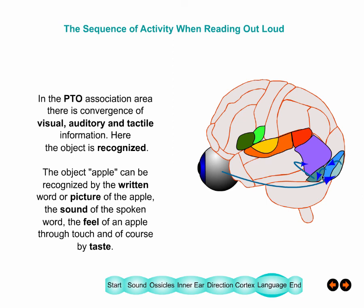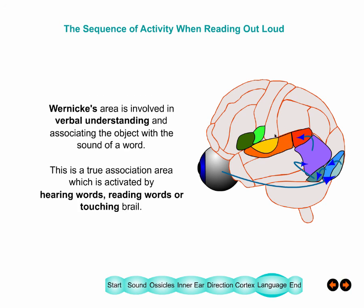From the visual word form area, information flows to the PTO junction where integration with other modalities takes place. Then, if reading aloud, it goes to Wernicke's area where verbal understanding occurs, then to Broca's area in the frontal lobe where verbal expression occurs. Broca's area is also where working memory operates — you need to assemble a complete sentence before opening your mouth, getting all the words in the right order.